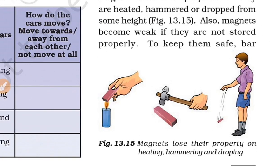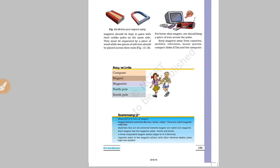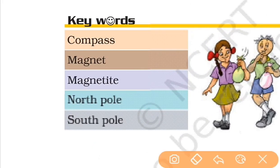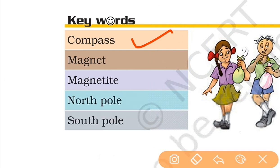Attractions and repulsions — magnetic properties can also be lost. You can destroy magnetic properties by heating the magnet or by a hammering action.